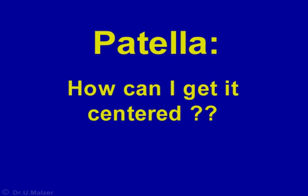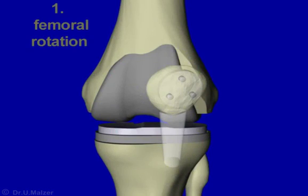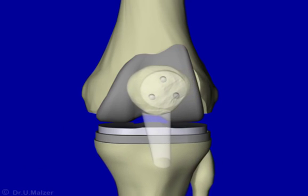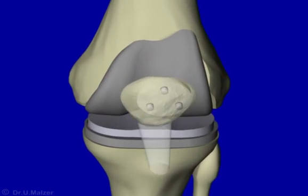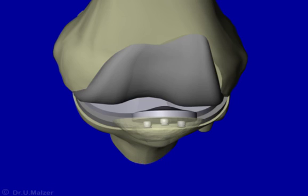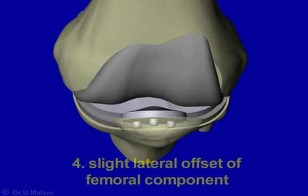Patellar tracking is one of the chief problems in total knee arthroplasty — some 50% of complications encountered are due to a poorly centered patella. As mentioned before, correct femoral and tibial component alignment is crucial for correct patellar tracking. If a patellar component is used, the dome should be offset medially to match the normal anatomical pattern. In some cases, centering may be improved by slight lateralization of the femoral component.